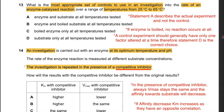Question 13: What is the most appropriate set of controls for an investigation into enzyme reaction rate over temperatures from 25°C to 65°C? Answer A describes the actual experiment, not the control. Answer C: boiled enzyme only - if the enzyme is boiled no reaction occurs at all, so it is incorrect. Between B and D: a control experiment should have only one factor altered at a time. Answer D - substrate only at all temperatures tested - is correct, as only one factor is involved. Answer B has both enzyme and boiled substrate, so it is incorrect. Hence the answer is D.